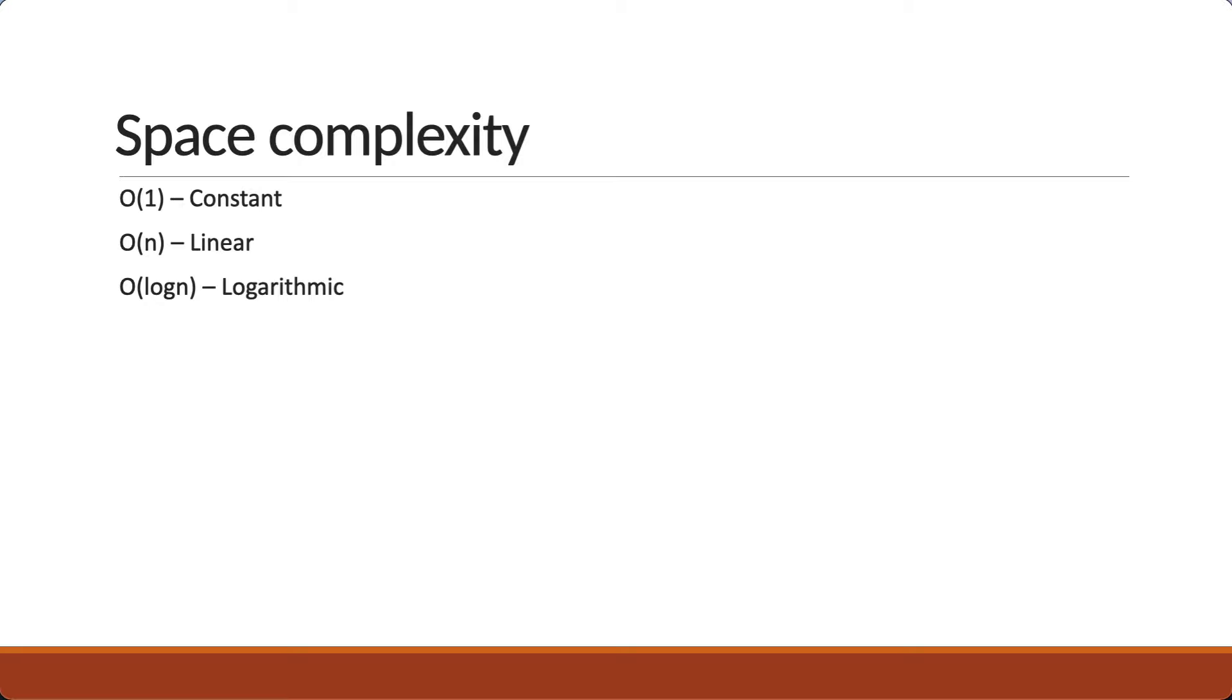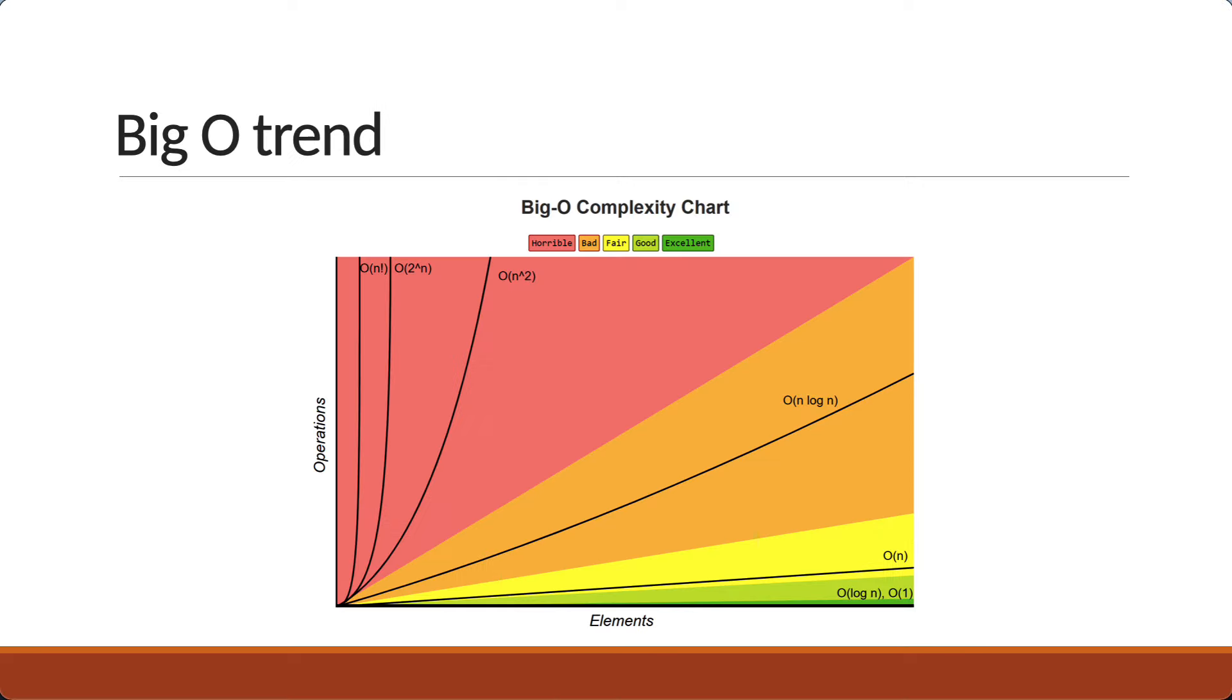Typically, you would find algorithms with these three space complexities. Although it is common to solve with quadratic time complexity, quadratic space complexity is something you should try to avoid. Here is a graph plotting the number of operations versus elements from bigocheatsheet.com. Pause for a minute and understand how the input size affects the performance. You can see O of log n and O of 1 are very good whereas O of 2 power n and O of n factorial are just really bad time complexities and should be avoided when possible.